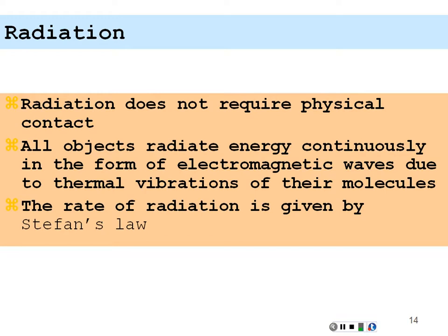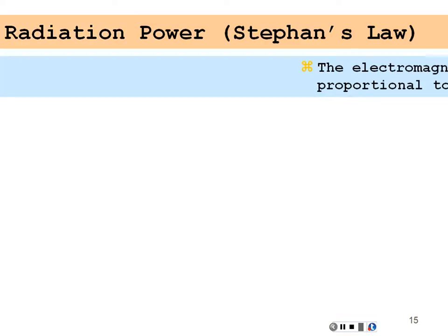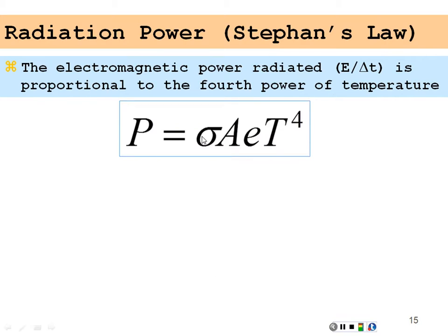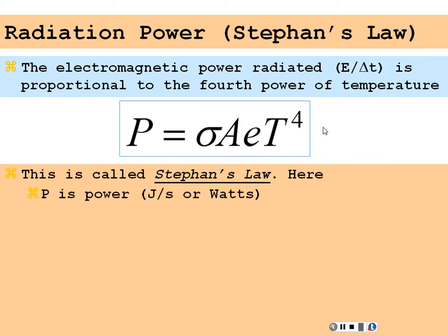The rate of radiation is given by Stefan's law. Here is the electromagnetic power radiated, energy per time by Stefan's law, and it's proportional to the fourth power of the temperature. Power is equal to sigma A E T to the fourth power. Stefan's law. P is the power in joules per second or watts. Sigma is the Stefan-Boltzmann constant and it is 5.67 times 10 to the minus 8 watts per meter squared per Kelvin to the fourth power. Note the nice number 5.67 again and this times 10 to the minus 8. Physicists like to make these numbers easy. 5.67 times 10 to the minus 8. Too easy. Got to remember that one.